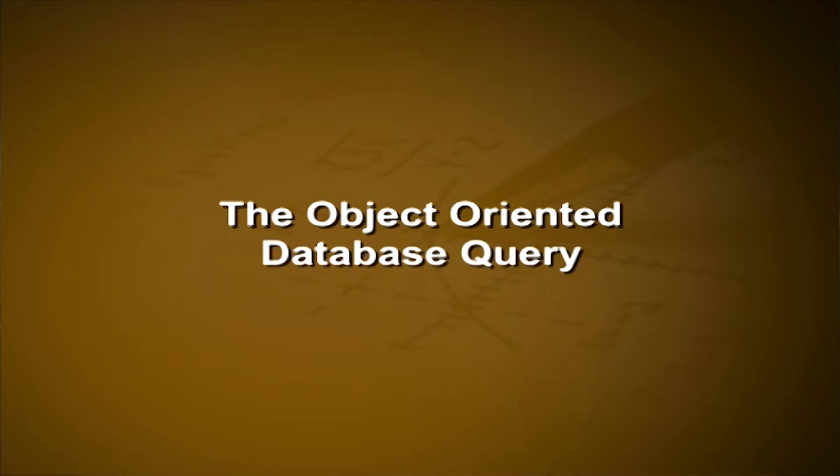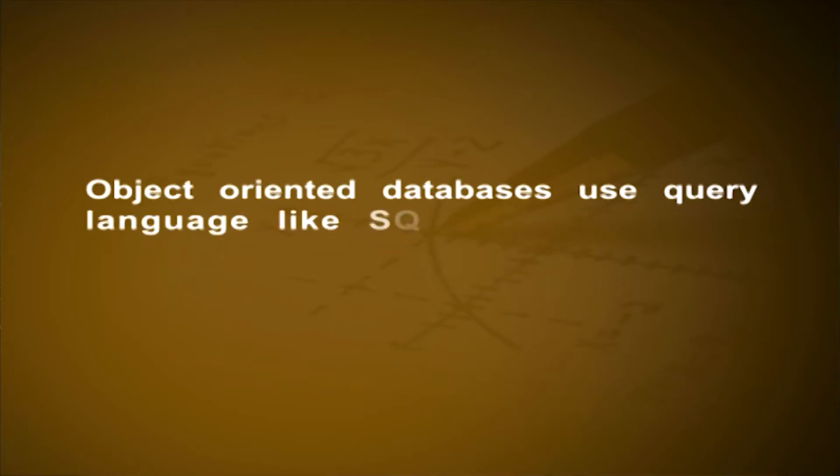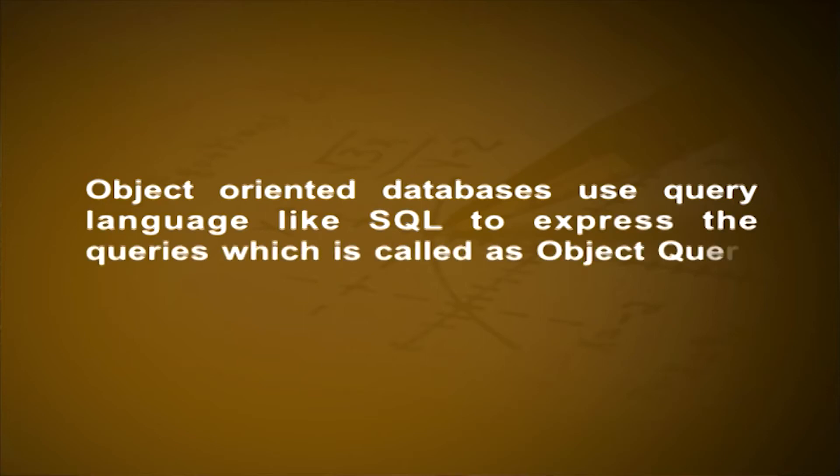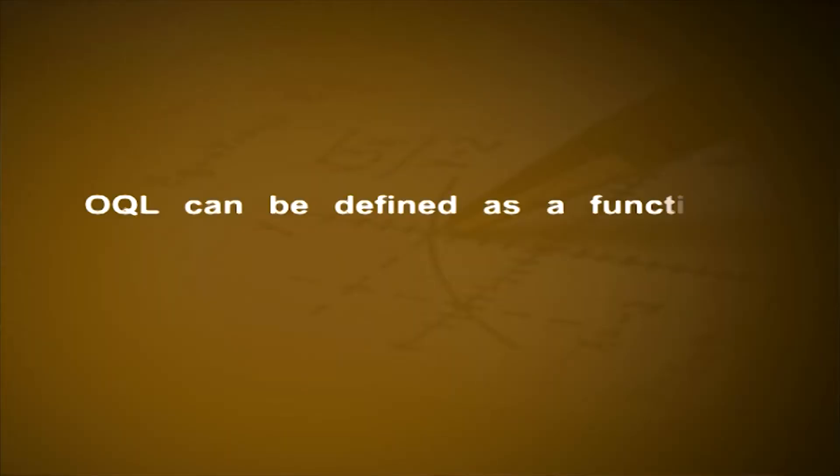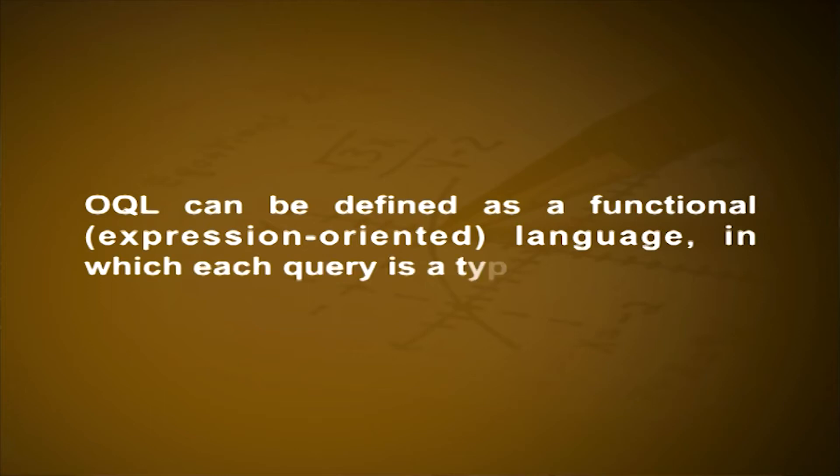Object-oriented databases use a query language similar to SQL called Object Query Language or OQL. OQL supports all mandatory characteristics of ODBMS to make efficient object database systems. It supports complex data objects, path expressions, operation invocation, inheritance, and object extensions for object identity. OQL is a very efficient way of expressing object queries, keeps object integrity by using implemented methods, and can be embedded in other languages like C++ and Java. OQL is defined as a functional or expression-oriented language in which each query is a typed expression; a type can be an atomic object, collection object, or literal.